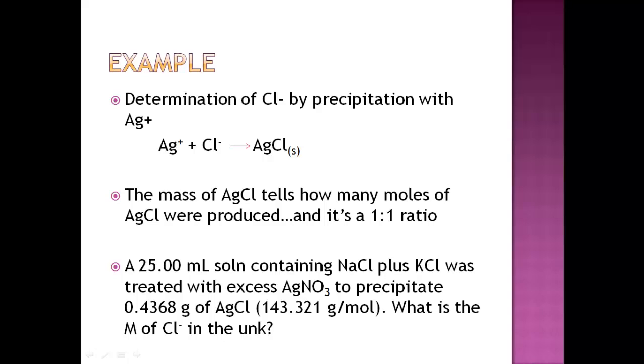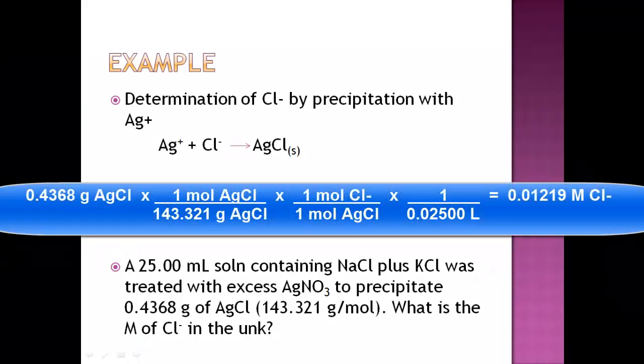So a simple example is written down here. A 25.00 mL solution containing NaCl plus KCl was treated with excess AgNO3 to precipitate 0.4368 grams of AgCl (143.321 g/mol). What is the molarity of the chloride ion in the unknown? So you know that you received 0.4368 grams. That's your product. You convert that to moles of AgCl using 143.321 on the bottom, one mole of AgCl on the top, and then you use your simple mole-to-mole ratio. In one mole of AgCl, there's one mole of chloride ion.